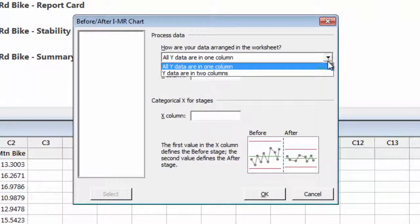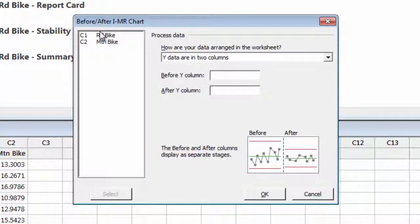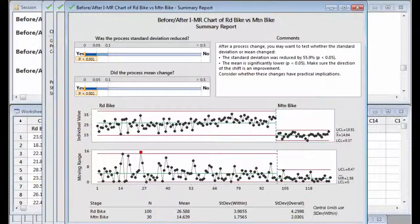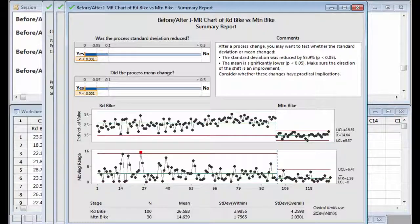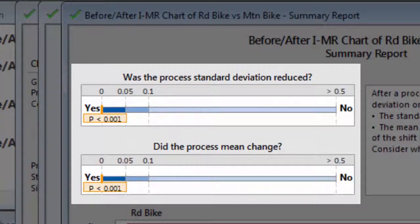The data from Joel's new route is in a second column of the worksheet, so choose Road Bike as the Before Y column and Mountain Bike as the After Y column. The Assistant's Summary report provides the bottom-line results of the analysis. Both the process mean and the standard deviation have been significantly reduced.